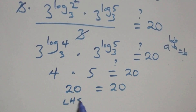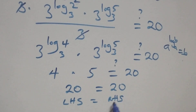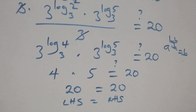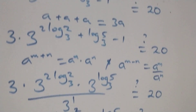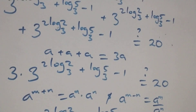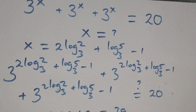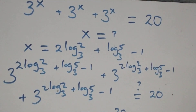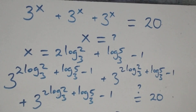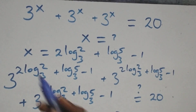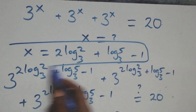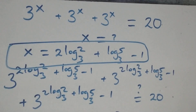Therefore we conclude that x equals to 2 log₃2 plus log₃5 minus 1 satisfies the given equation. Thank you for watching.